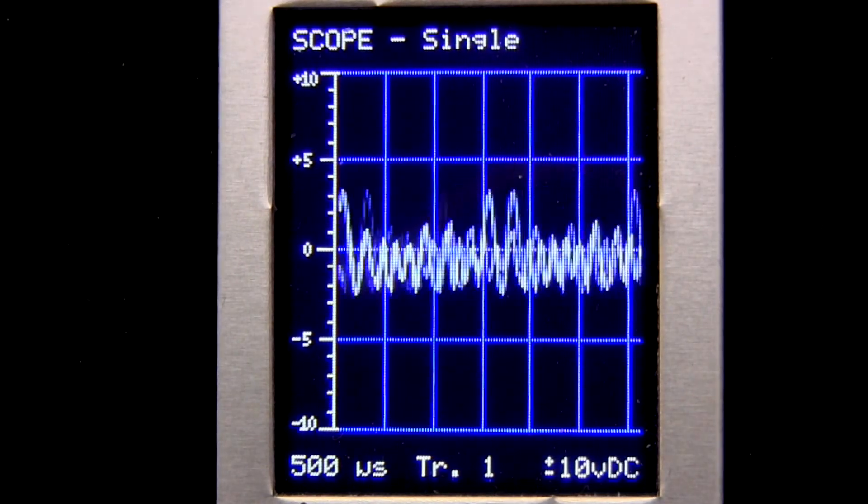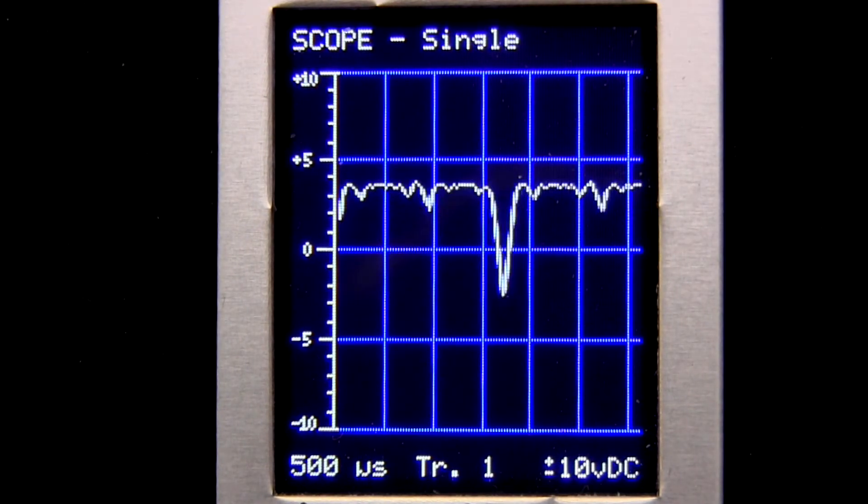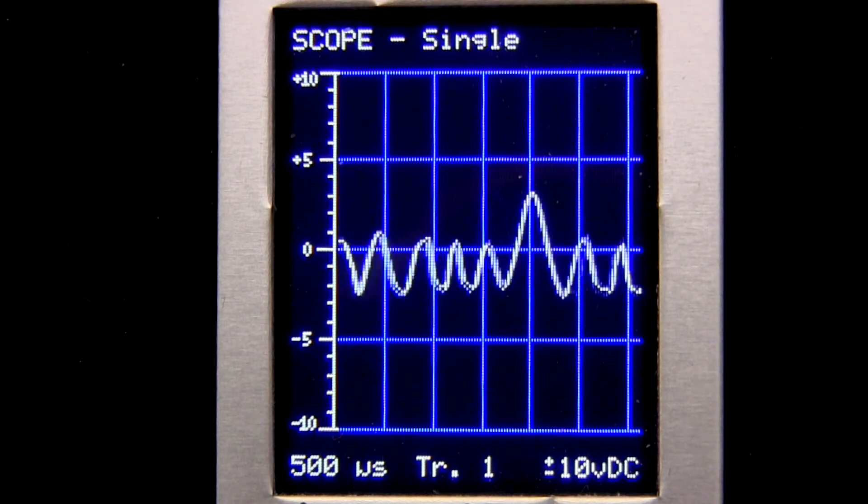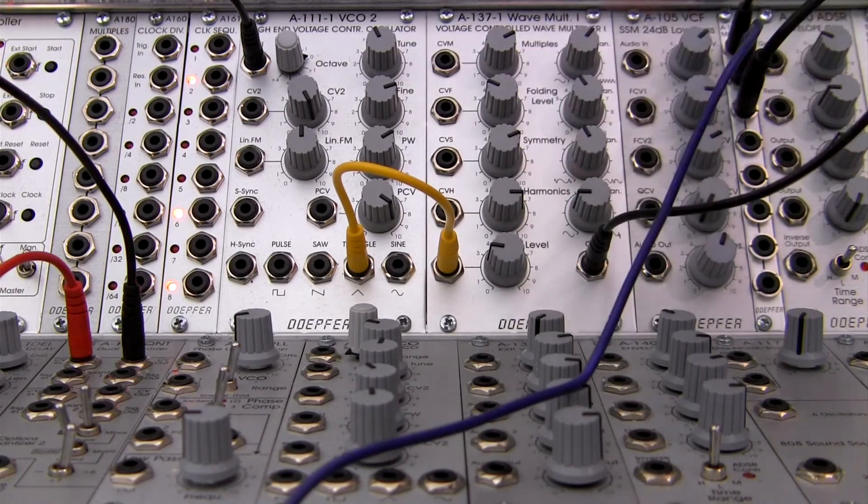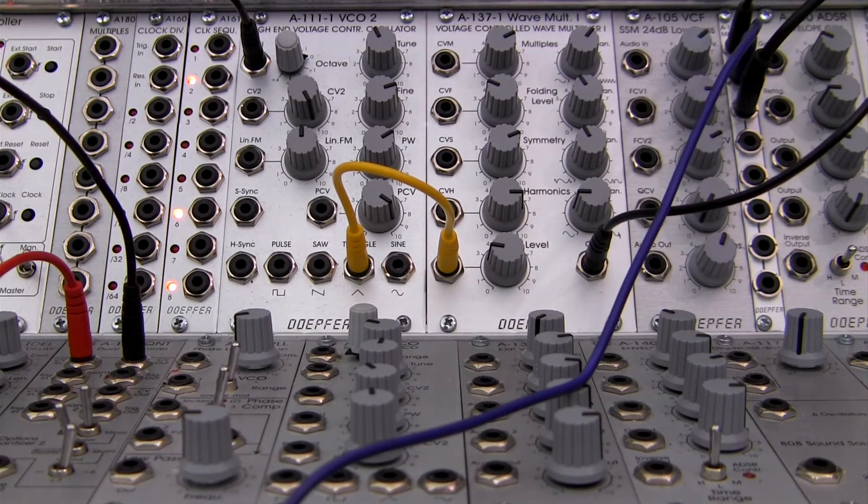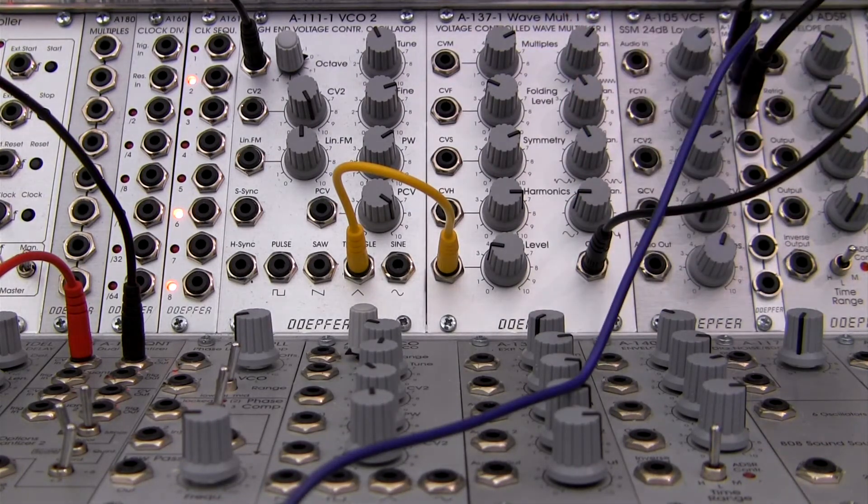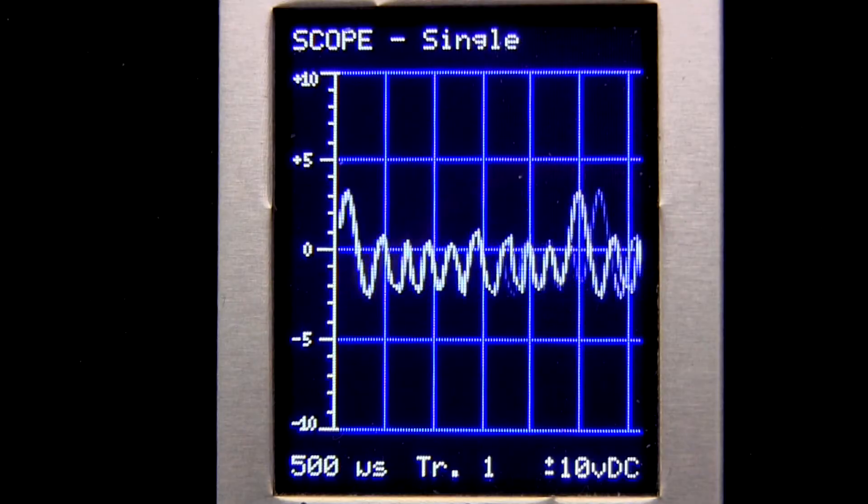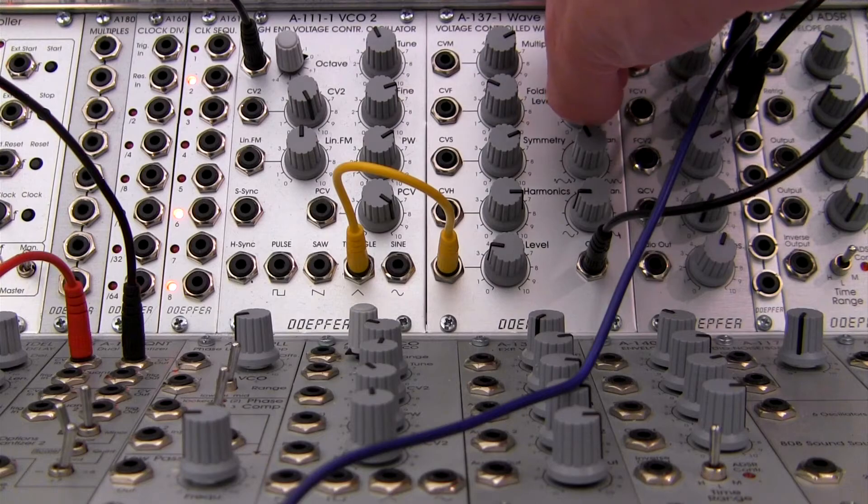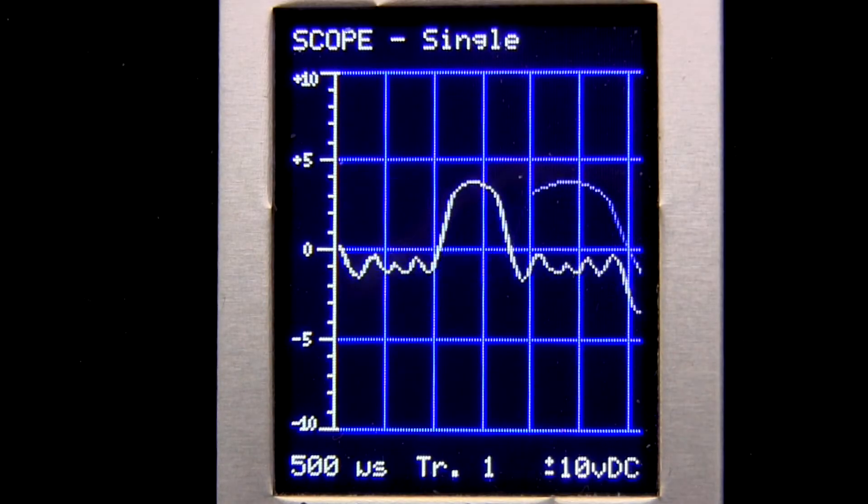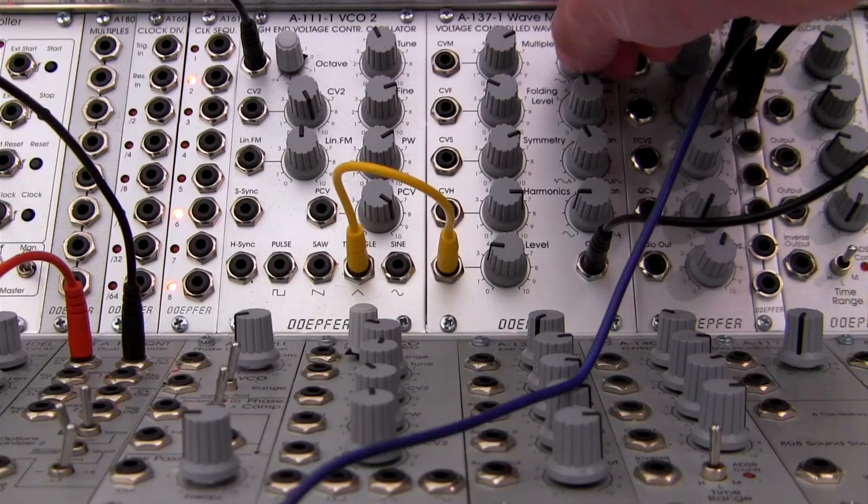Let me just kind of quickly move it. You just keep your eye on the oscilloscope. I'm just going to leave it there, about the middle position, pretty close to it anyway. Now I'm going to adjust the folding level a little and then the multiples again.